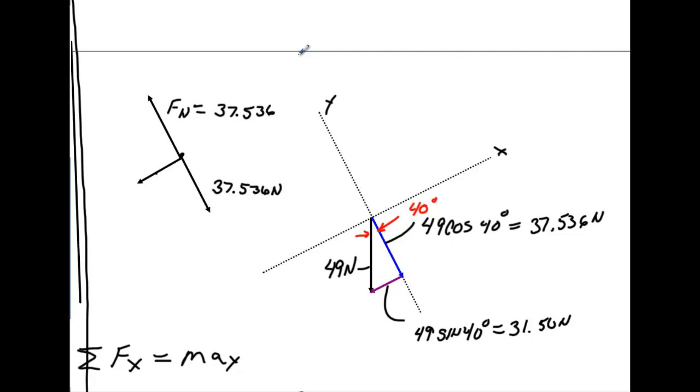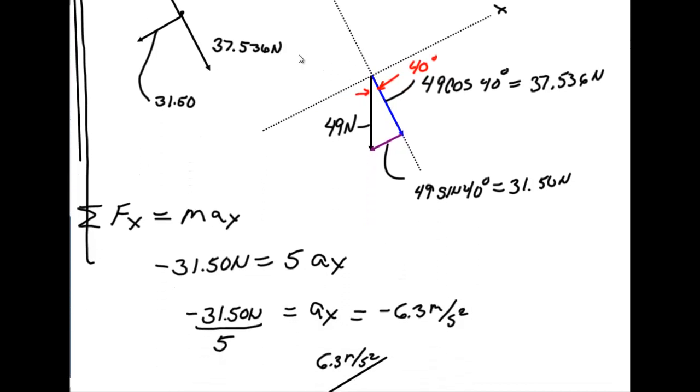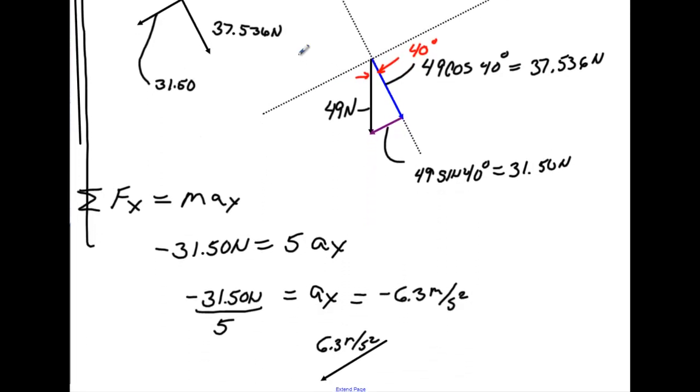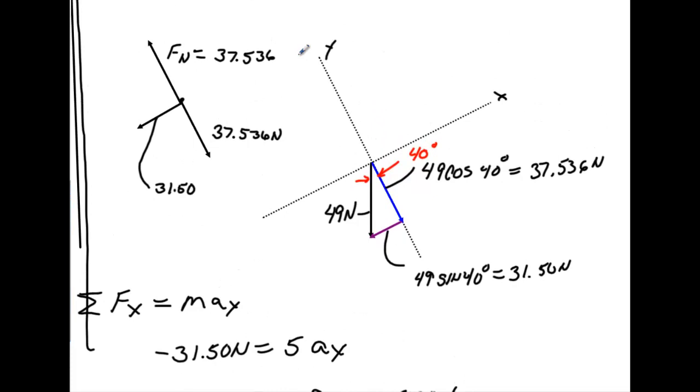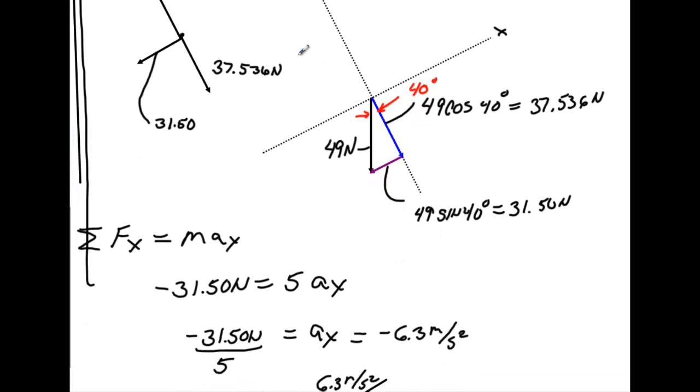The only other force you're going to have is this one right here, which this one will be the 31.50. And again, this is where I have no friction taking place. Now at this point, I sum the forces in the x direction. I'm not going to solve the forces in the y direction because I know these two balance out. I'm going to get zero.